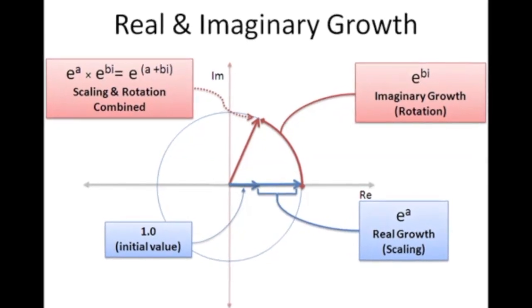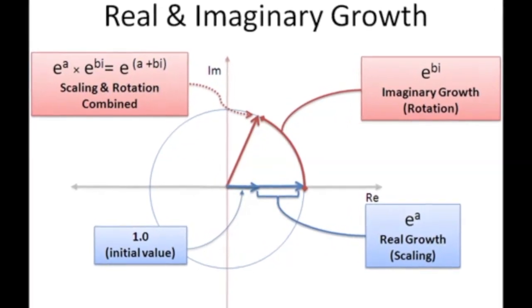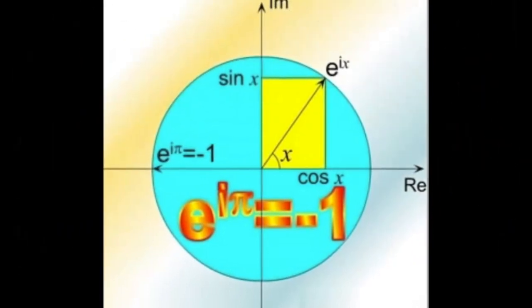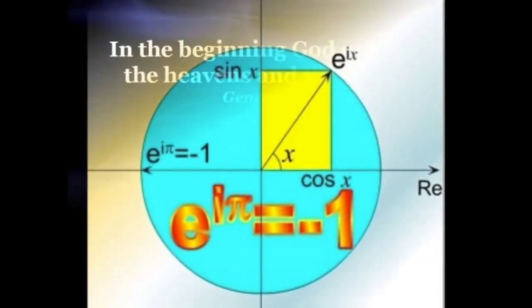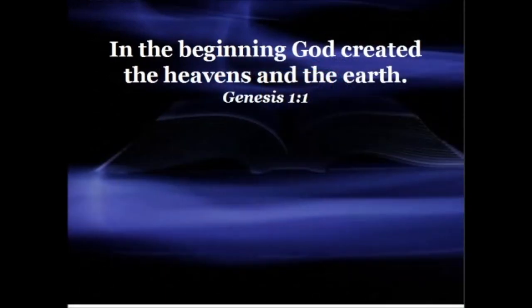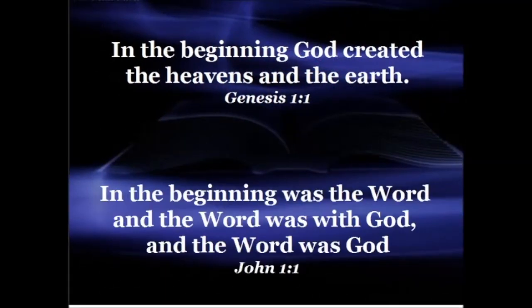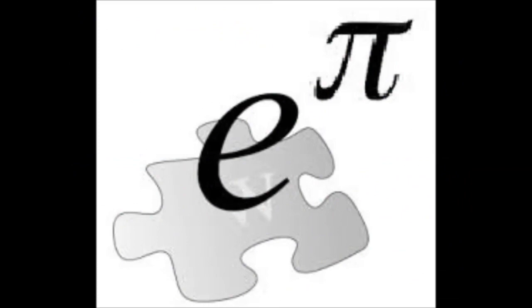Taken alone, either of these occurrences might be written off as a coincidence, but when viewed together, especially considering that both verses are united in theme—Genesis 1:1 referring to a physical creation in the beginning and John 1:1 referring to a spiritual creation that was in the beginning, before the beginning—we get pi and natural log base e.